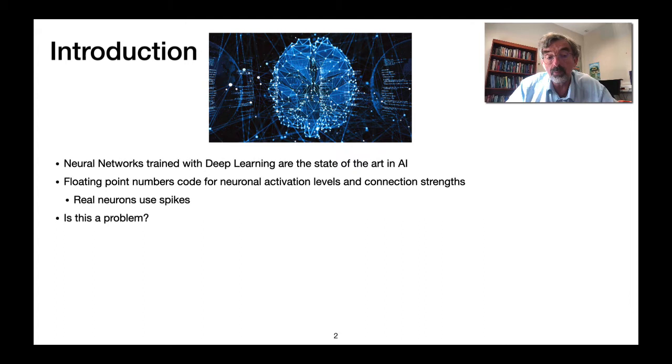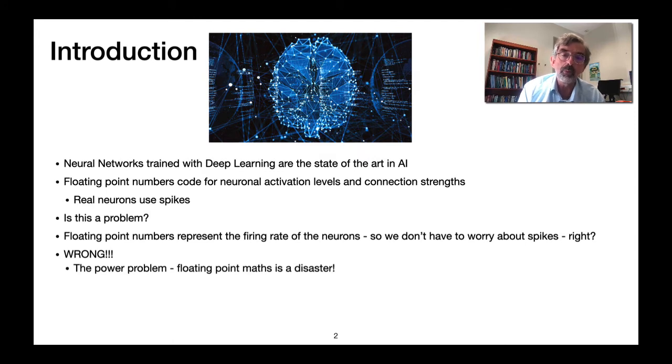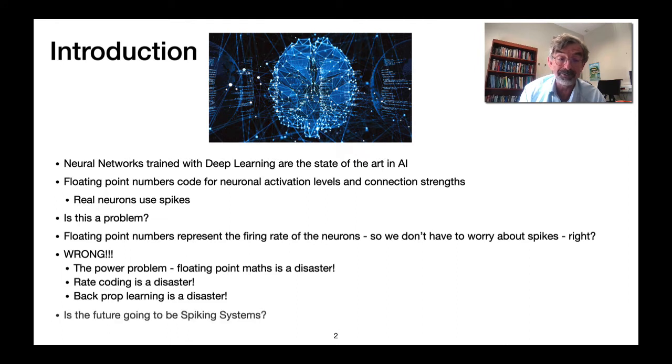Now for many people that's not a problem because the floating-point numbers are supposed to represent the firing rate of neurons and so we don't have to worry about the fact that real neurons use spikes, right? But I think that's wrong. Personally there's a real problem with power. Floating-point math is extremely expensive. Rate coding as such is also a disaster as I'll attempt to show. Backprop learning typically which is what people typically use is also a disaster, very expensive to do, and so I'm going to be pushing the idea that we should be moving towards spiking systems as being the best solution for the future.